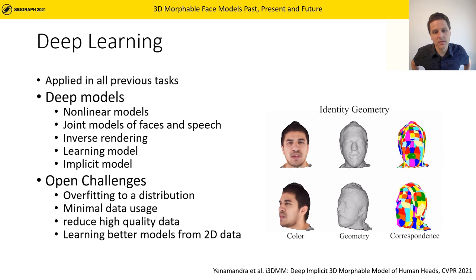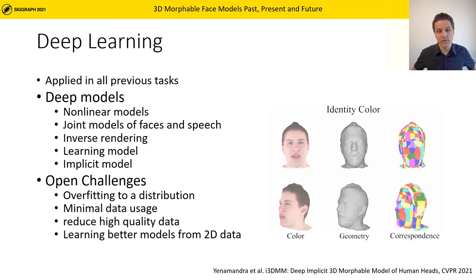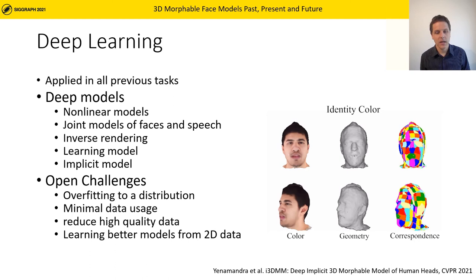However, most advances through deep learning lead to novel challenges — for example, overfitting to a distribution of faces, as model complexity comes at a cost. The models derived from 2D data solely have not yet reached the same quality as models derived from 3D scans. We hope to reduce the need for expensive 3D data and learn models that can go beyond what we currently reach with high-quality 3D scans.